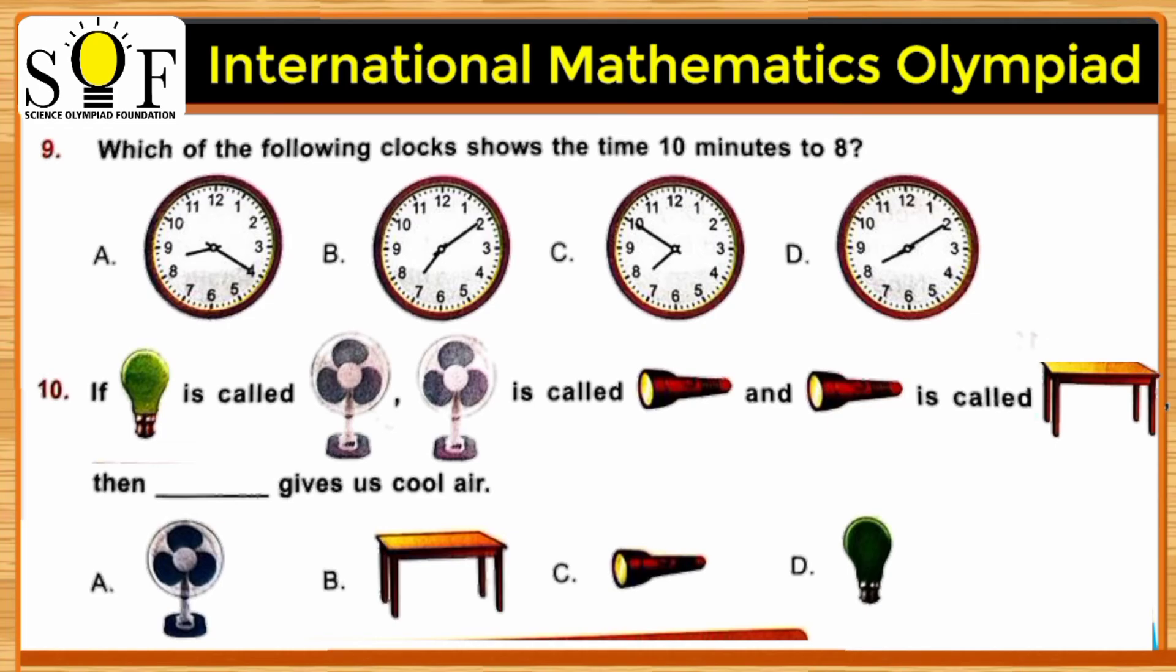Which of the following clocks shows the time 10 minutes to 8? Ten minutes to 8 means that it's not yet 8 o'clock. We still have 10 minutes, so we need to find out the clock that shows 7:50. The correct answer is option C.